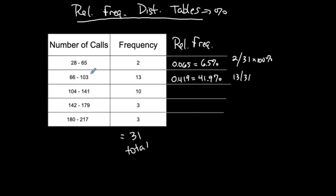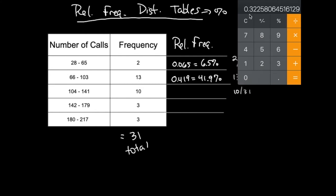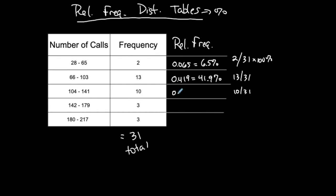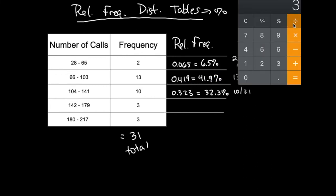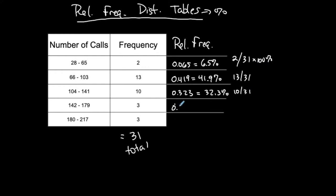For the third class: 10 out of 31 equals 0.323, or 32.3%. For the fourth and fifth classes, each has a frequency of 3 out of 31, giving 0.097, or 9.7%. Since both classes have the same frequency, their relative frequencies are also the same.